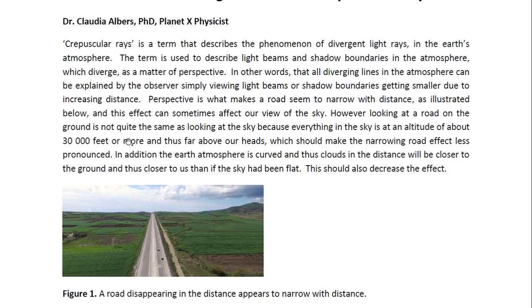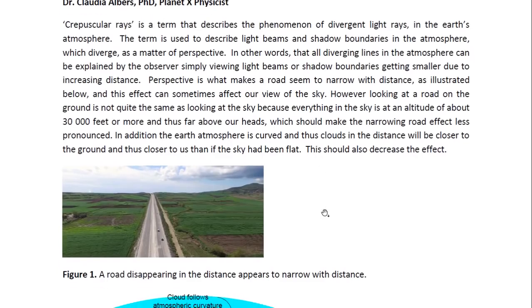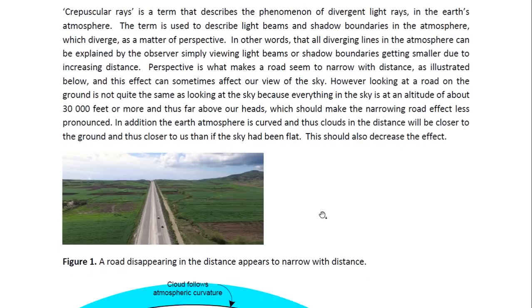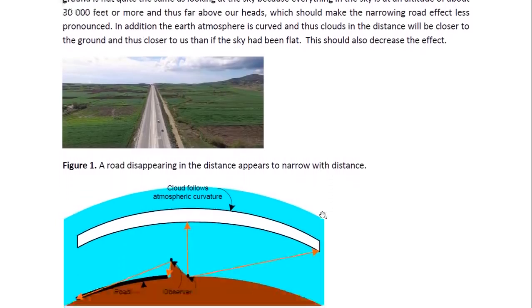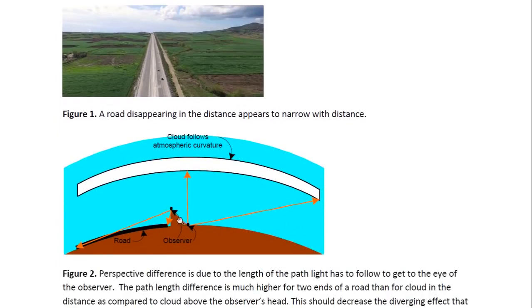However, looking at a road on the ground is not quite the same as looking at the sky, because everything in the sky is at an altitude of about 30,000 feet or more, and thus far above our heads, which should make the narrowing road effect less pronounced. In addition, the Earth's atmosphere is curved, and clouds in the distance will be closer to the ground, and thus closer to us than if the sky had been flat, and this should therefore decrease the effect.